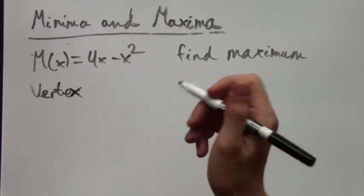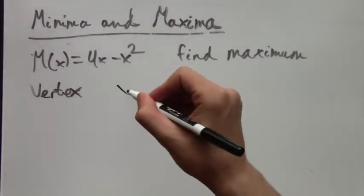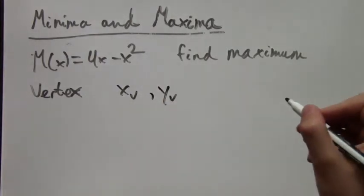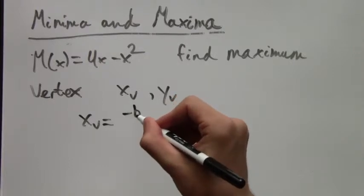So we know that this maximum is going to be at the vertex. And again, it's a maximum because since we have negative x squared, then this parabola opens down.